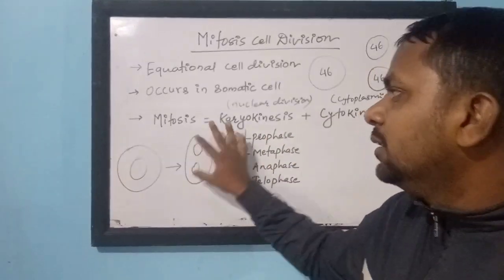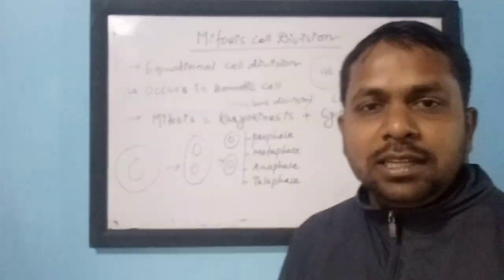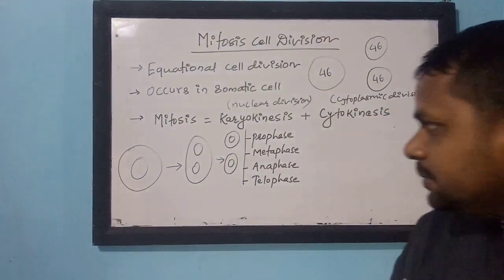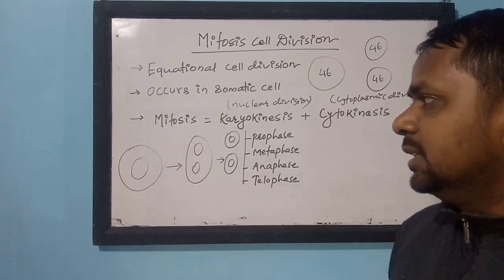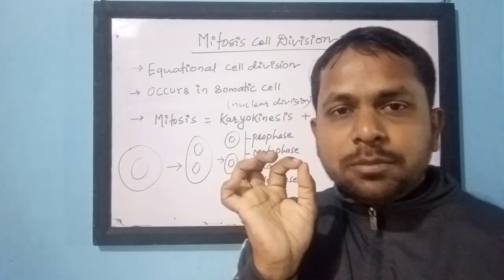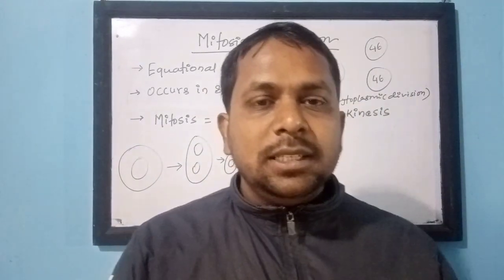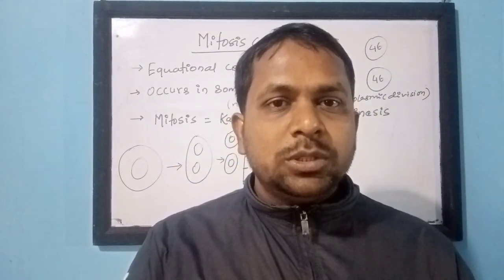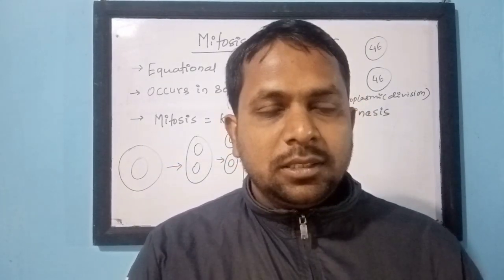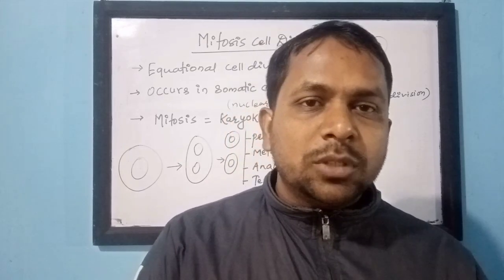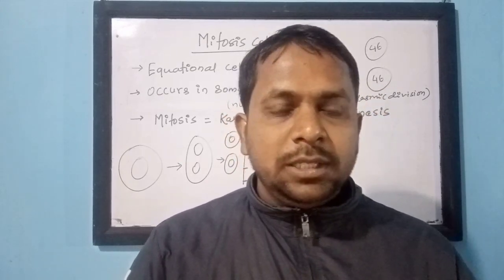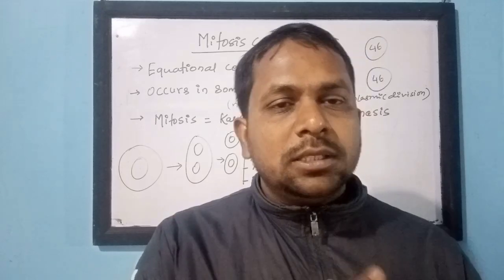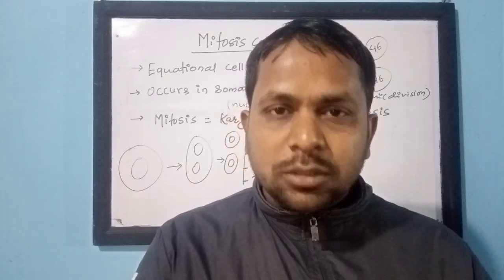When karyokinesis plus cytokinesis both occur, we can say the total mitosis cell division has occurred. In mitosis, one mother cell produces two daughter cells, and they contain an equal number of chromosomes to the mother cell. If the mother cell contains 46 chromosomes, the daughter cell also has 46 chromosomes.